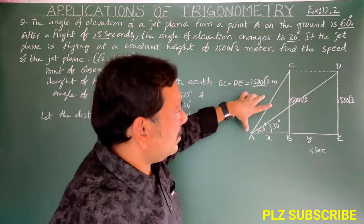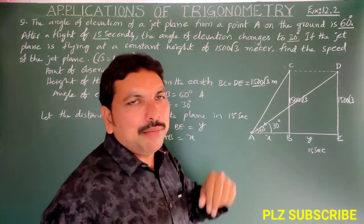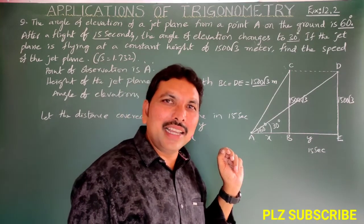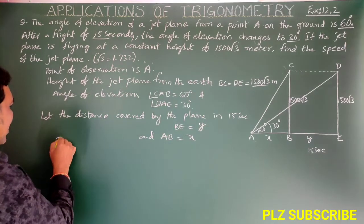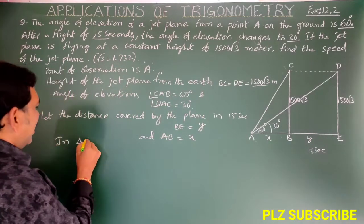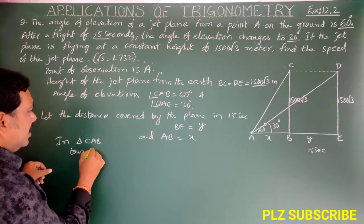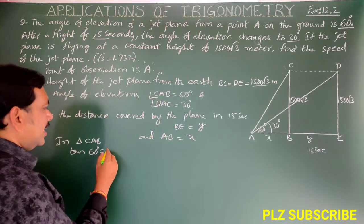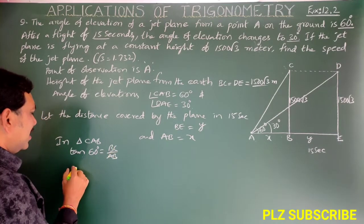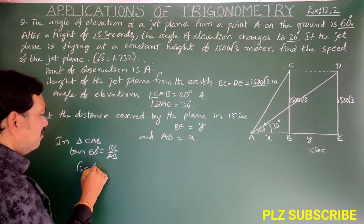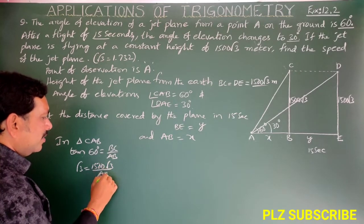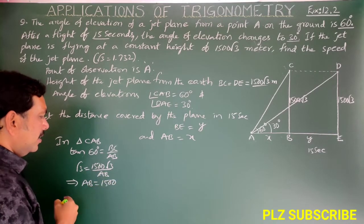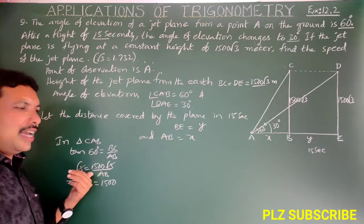In triangle CAB, tan 60 degrees = opposite side BC by adjacent side AB. So √3 = 1500√3 / AB. Therefore AB = 1500 meters, since root 3 cancels on both sides. So x = 1500 meters.